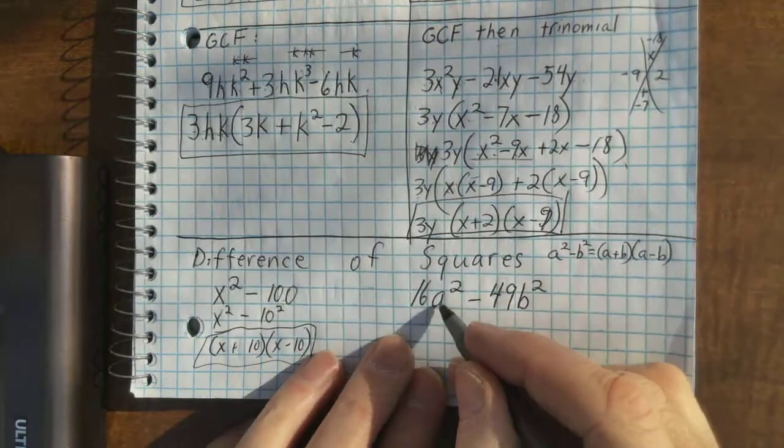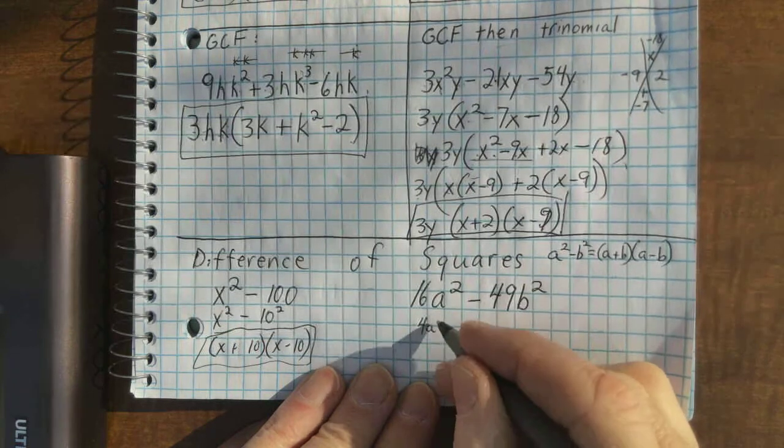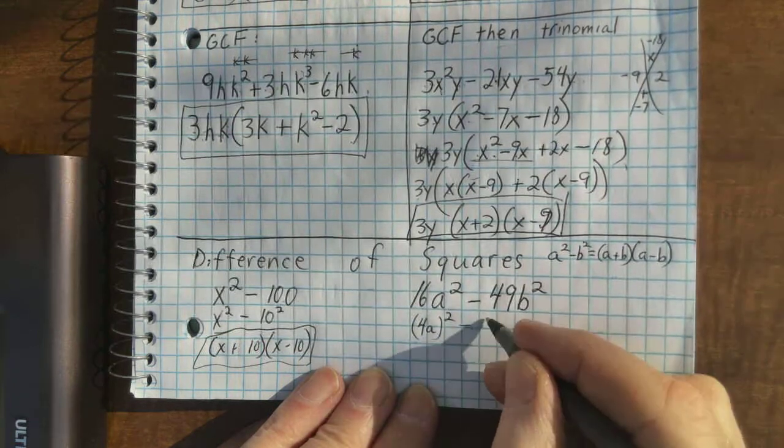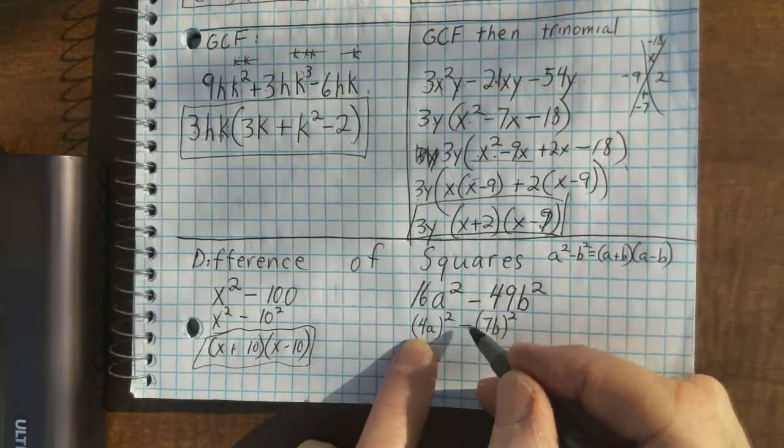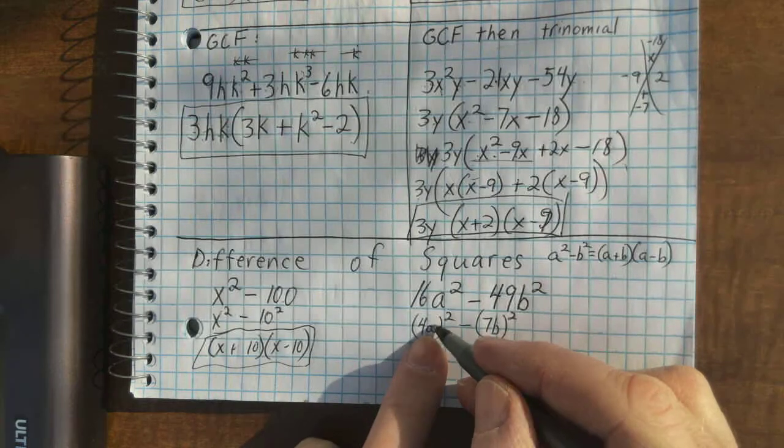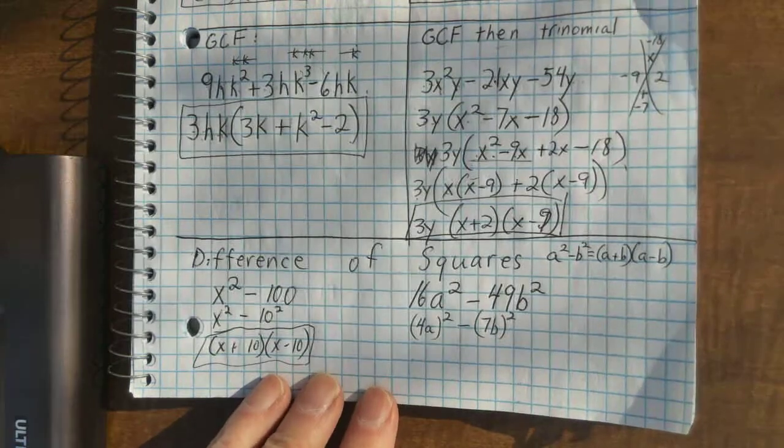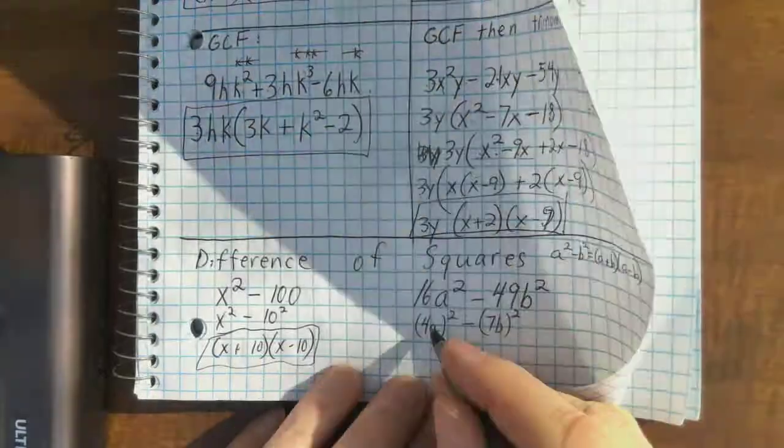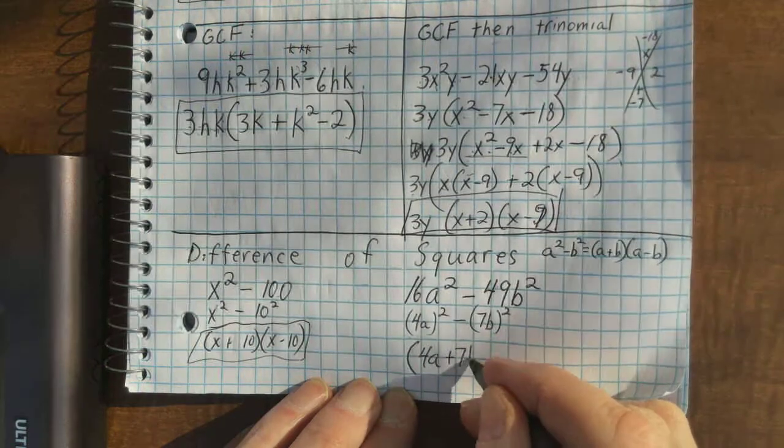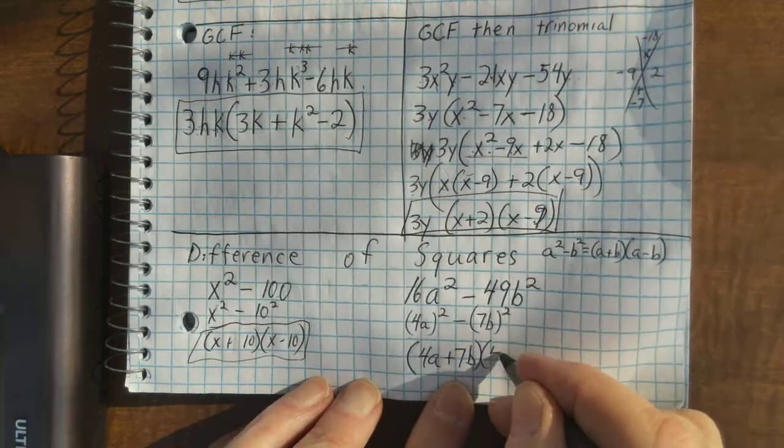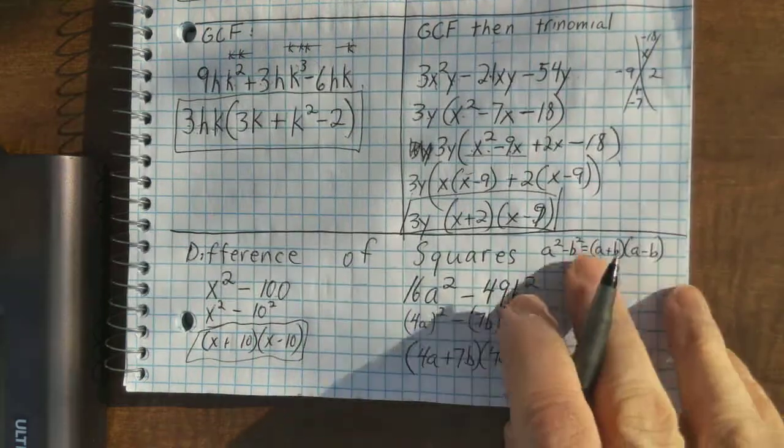And then, this is 4a squared minus 7b squared. If I write them as squares, 4 times 4 is 16. a times a is a squared. 7 times 7 is 49. b times b is b squared. And so, when I write my final answer there, I'm going to write 4a plus 7b times 4a minus 7b. All right. There you go. God bless all of you.